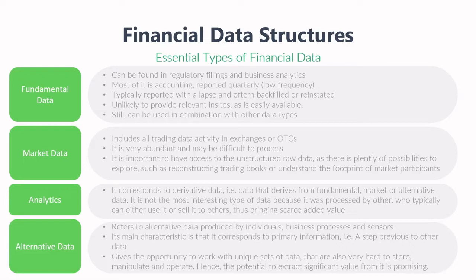Next, we move on to market data. Market data includes all trading data in exchanges or OTCs. It is very abundant and may be difficult to process. It is important to have access to the unstructured raw data we can extract from this market data. There is a possibility to explore patterns not clearly visible in the day-to-day market data we see, for instance, on Bloomberg terminals. By looking into more detail, we may reconstruct trading books or understand footprints of market participants, and therefore understand some patterns and act accordingly.